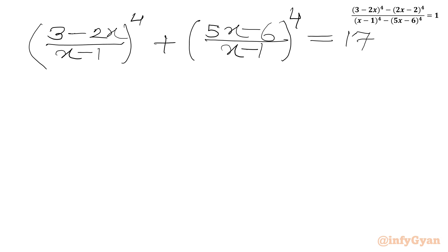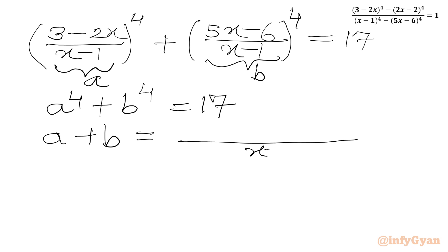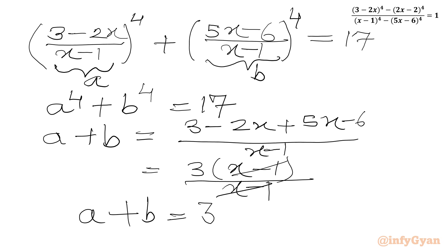Now I will use substitutions. Let a equal (3 minus 2x) over (x minus 1) and b equal (5x minus 6) over (x minus 1). So the first equation is a^4 plus b^4 equal to 17. Now we find a plus b: adding the numerators 3 minus 2x plus 5x minus 6 over x minus 1 gives 3x minus 3 over x minus 1, which is 3(x minus 1) over (x minus 1) equal to 3. So a plus b equal to 3 is equation 1, and a^4 plus b^4 equal to 17 is equation 2.